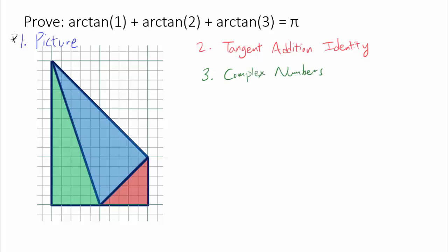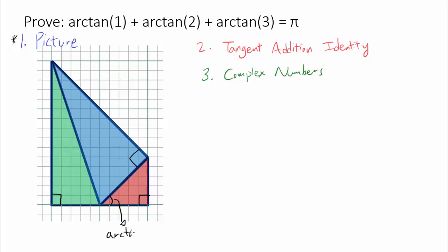Let's begin with the most elegant method, using a picture. The proof is instantaneous. We have three right triangles. The first right angle comes from two 45-degree angles. The angle for the first triangle is arc tangent of 1, because tangent of that angle is 1 over 1. The second angle is arc tangent of 2, because the opposite side is twice the length of the adjacent side, giving tangent of 2 over 1.